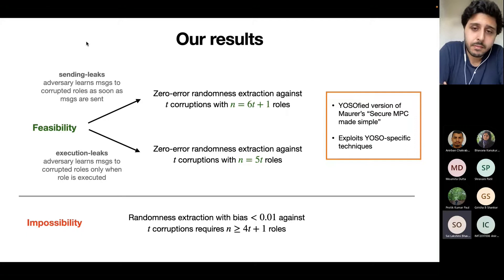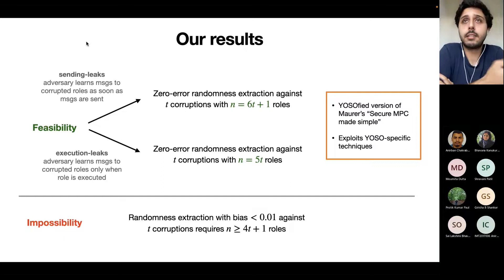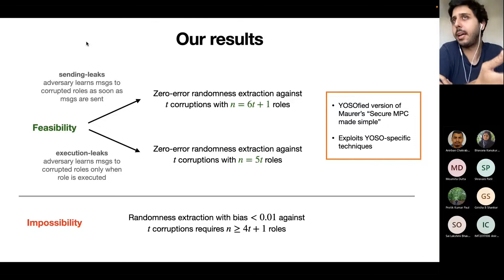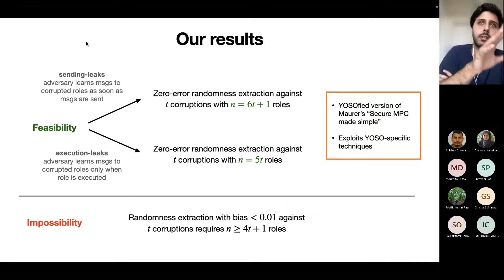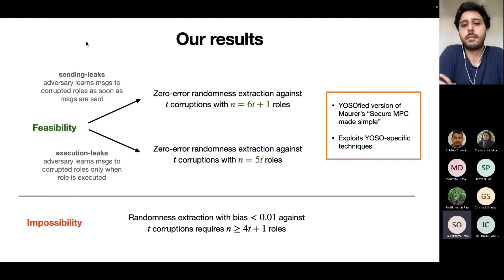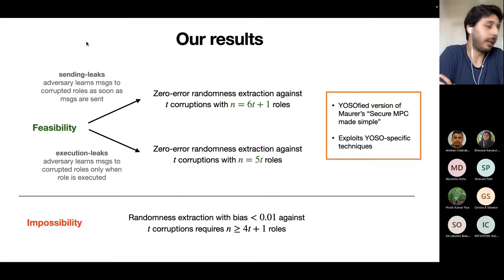This bias has to be something negligible in the security parameter, right? What we're saying is that even if you just want sub-constant bias — say 0.001 — you cannot do that unless you have at least 4T+1 parties. Even forgetting about negligible, just achieving sub-constant bias requires 4T+1. As for negligible bias, with our techniques we don't think you can get any improvement by just considering negligible error.